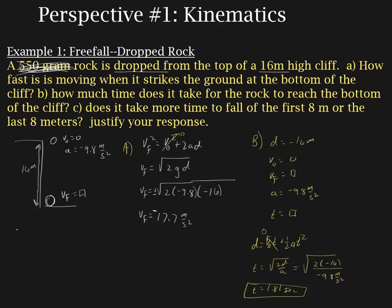Finally, let's look at part C. We're going to calculate delta t1, the time to go from the top of the cliff to negative 8 meters, and then delta t2, the time to go from negative 8 meters to negative 16 meters. There are a couple of ways of doing this — we'll do it mathematically first, and then there's another way using logic that would also suffice as justification.